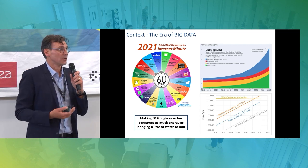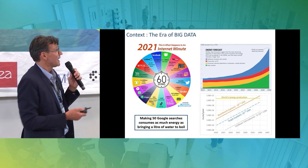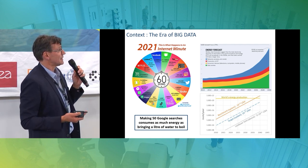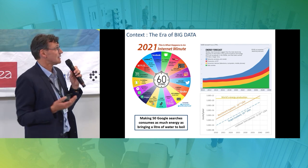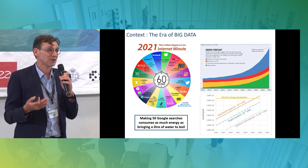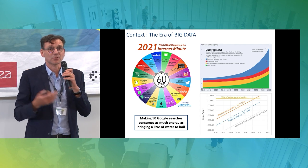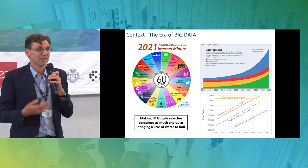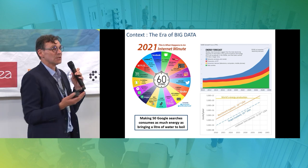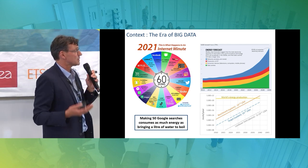The growth of data is moving exponentially, and so is the energy used. This is an energy forecast for ICT — you can see, for example, data centers and the amount of data generated. If you do 50 Google searches, it's about the amount of energy needed to boil one liter of water. There are projections saying that today we are at about 10% of world electricity used for electronics; in 2030 it could be 20%; and projections for 2040 suggest we would use 100% of world electricity for electronic devices.